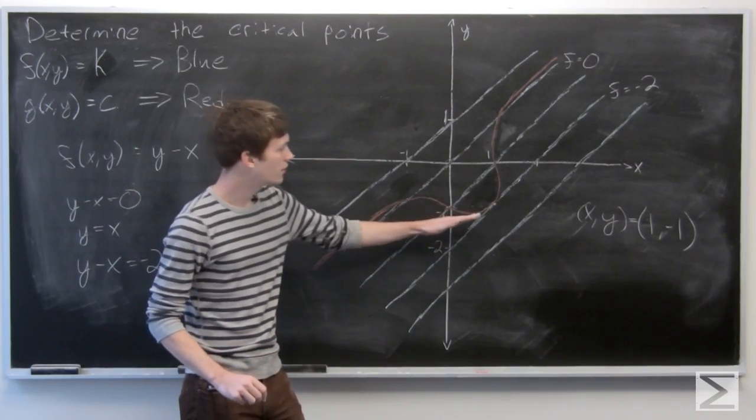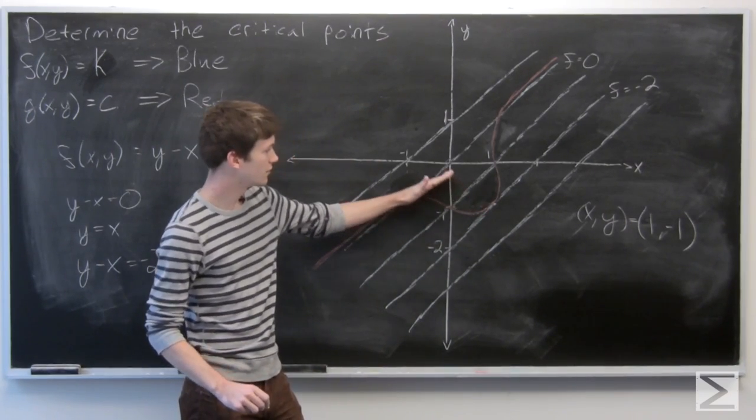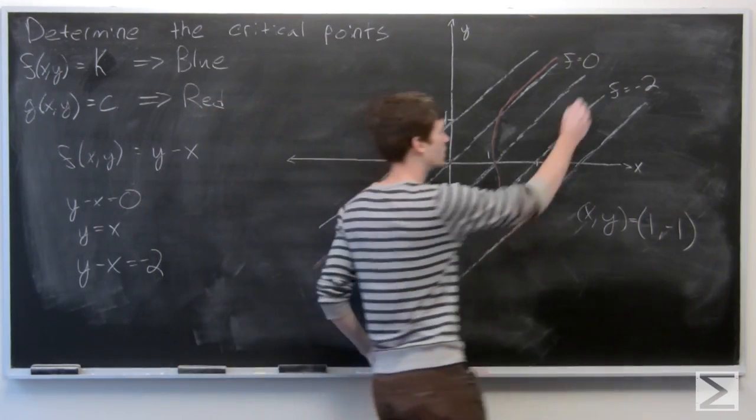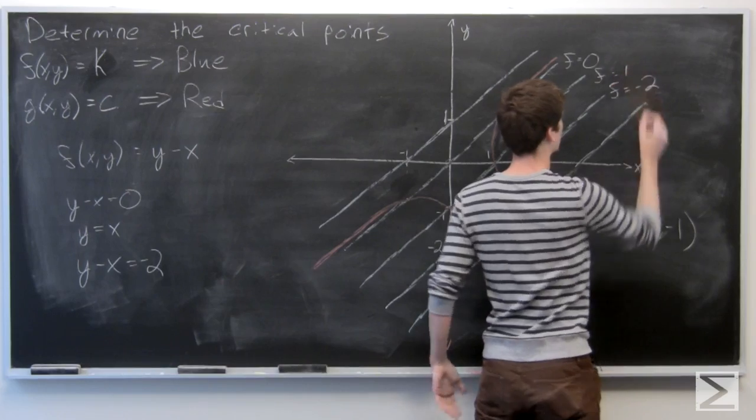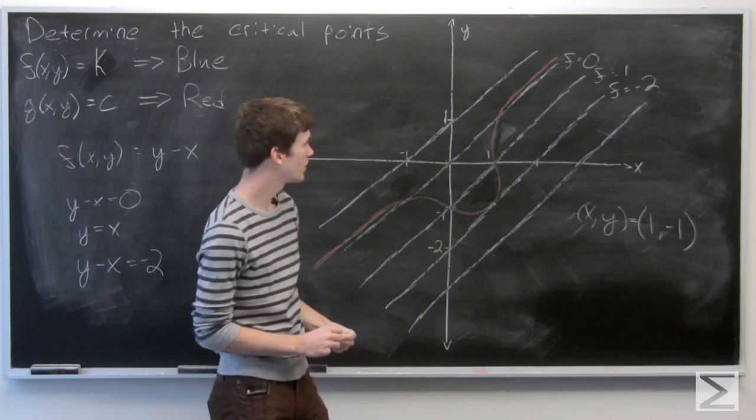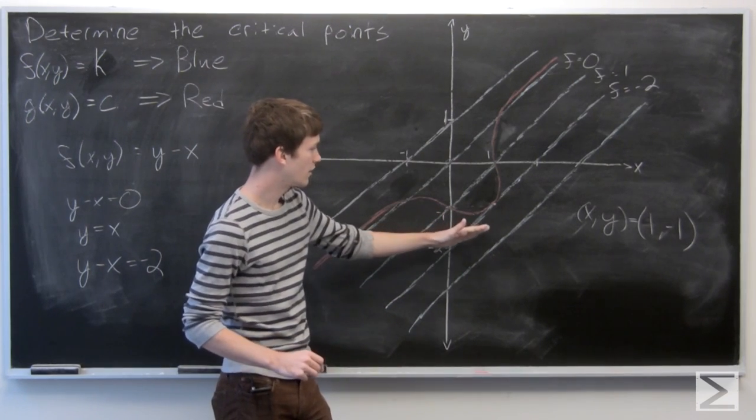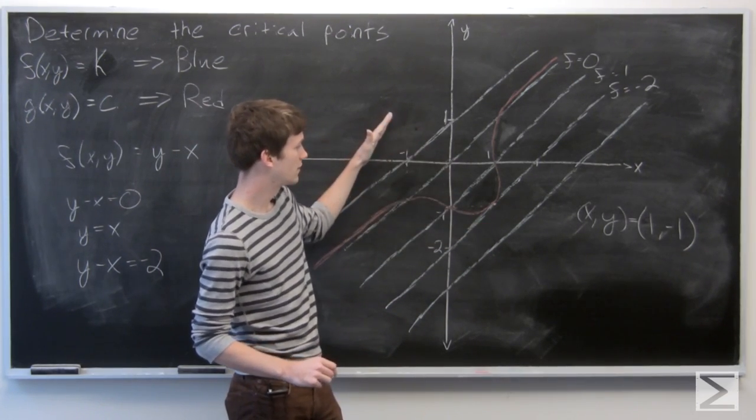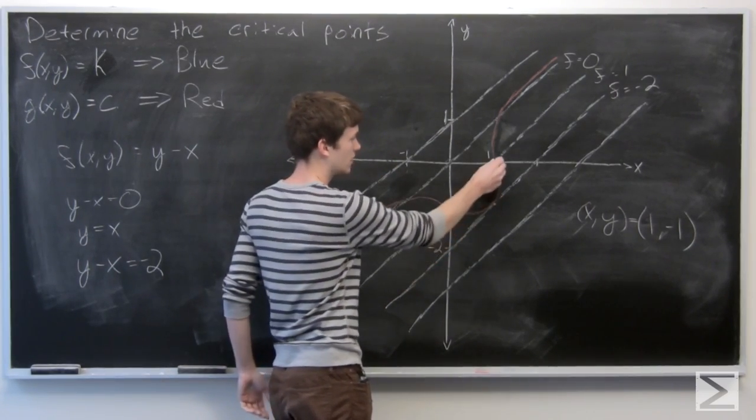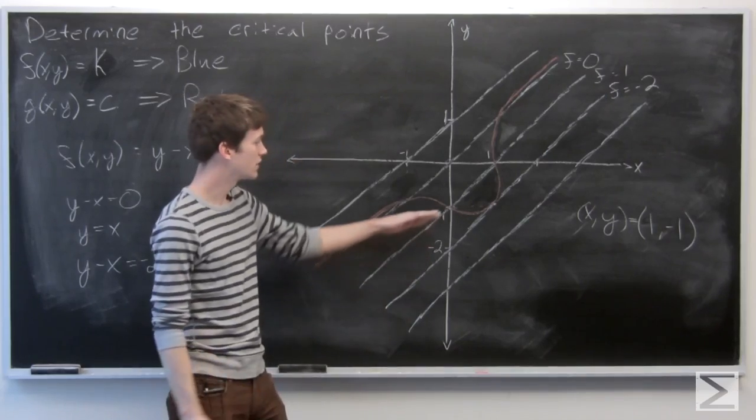And notice how when we're moving in this direction, we're increasing our values of f. So we can see that we go from f equals negative 2 to f equals negative 1 to f equals 0. So our function value is actually increasing as we gain points that actually lie on our constraint function.